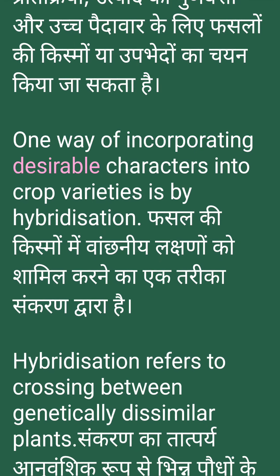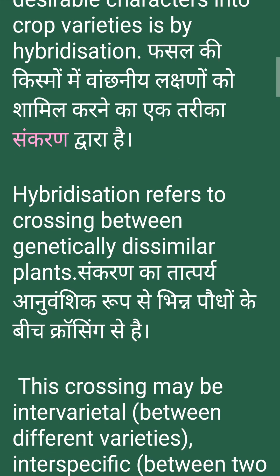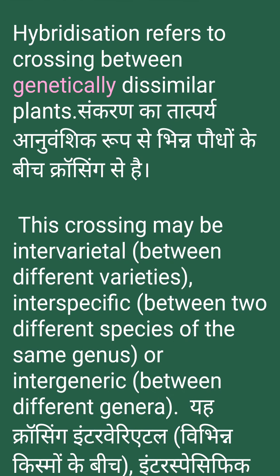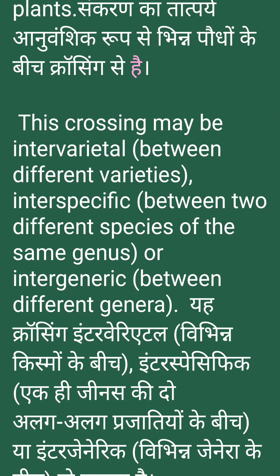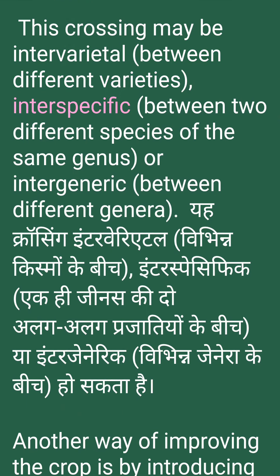One way of incorporating desirable characters into crop varieties is by hybridization. Hybridization refers to crossing between genetically dissimilar plants. This crossing may be intervarietal, between different varieties, interspecific between two different species of the same genus, or intergeneric between different genera.